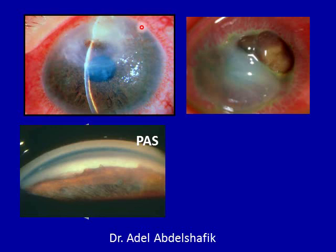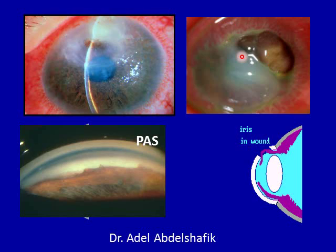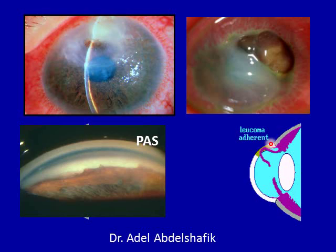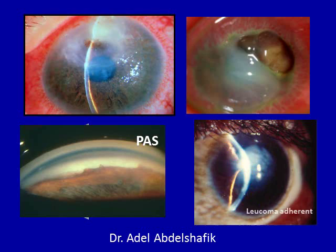If the synechiae extend more than 180 degrees, the patient may develop glaucoma. With a large perforation, a large defect allows the iris to prolapse outside. On healing, a layer of fibrous tissue forms, creating a pseudo-new cornea with the iris amalgamated into it, resulting in a dense opacity with the iris adherent to the back — this is called leukoma adherent.